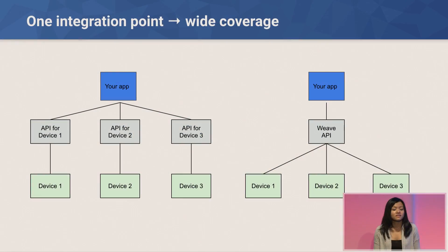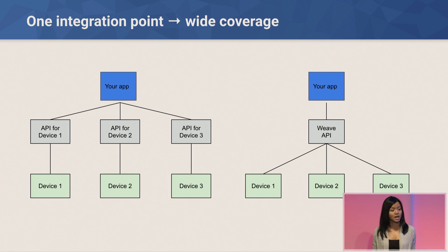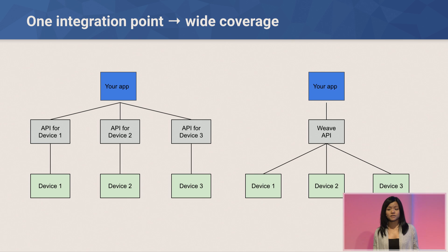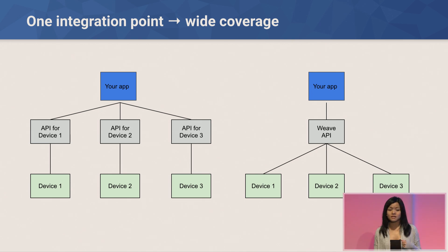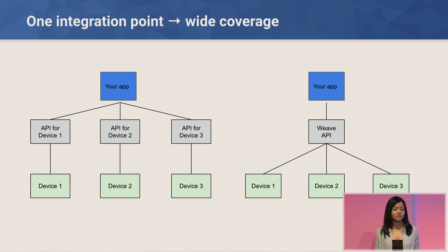The diagram behind us paints a very simple picture of why we think the Weave platform can help accelerate and simplify development for these developers. For an app developer today who wants to integrate with three devices — and let's say for simplicity these are devices of the same type — they have to work with three different APIs from three different manufacturers. Or, in a worst-case scenario, integrate with a device that does not have an API available because the device developer has not yet devoted resources to that, or they don't have an existing partnership to make that happen. With Weave, developers will have a single API interaction point with all Weave devices, independent of type.